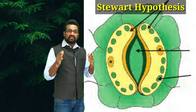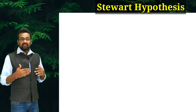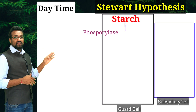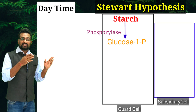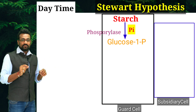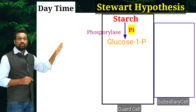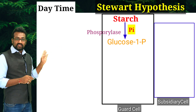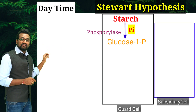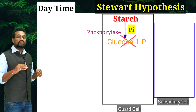As Stewart says, the stomata contains starch and various enzymes. The first enzyme to come into the picture is phosphorylase. This phosphorylase enzyme produces separate glucose molecules from the starch by adding inorganic phosphate into it. So from the starch, a separate glucose-1-phosphate molecule is produced by phosphorylase enzyme activity. This glucose-1-phosphate molecule is not directly usable.